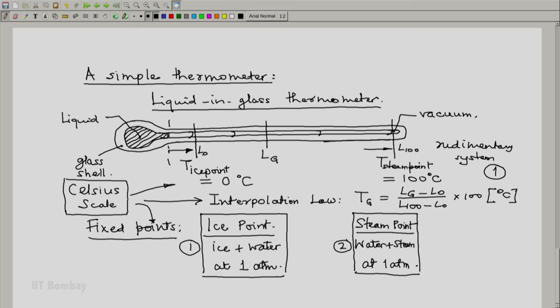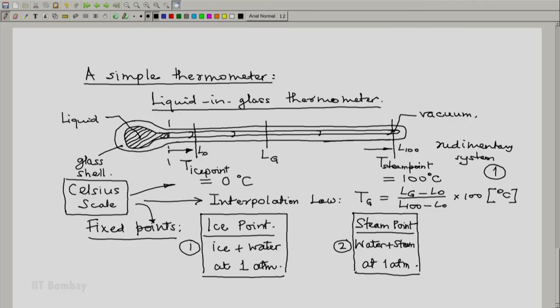So notice that even the simple Celsius scale requires the following things. First thing it requires is the thermometer. We need a simple system known as the thermometer. Then we need at least one fixed point; in this case we have two fixed points. Third, we need to define the temperatures of those two fixed points. And finally, for readings which are intermediate, we need an interpolation law which would finally give us a method to assign the label of the isotherm on which the system which is in equilibrium with the thermometer at its state Lg lies.